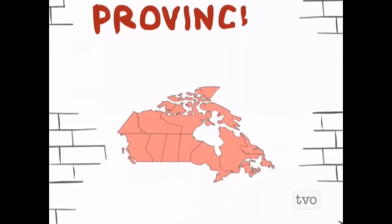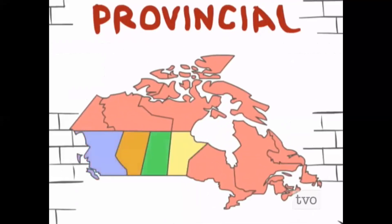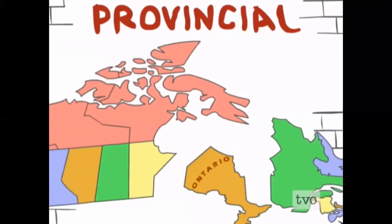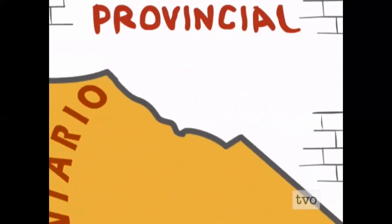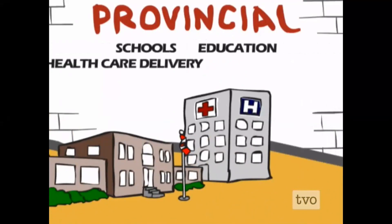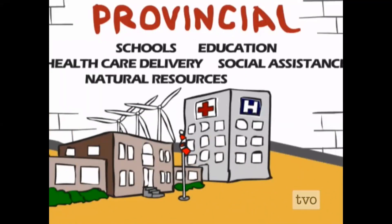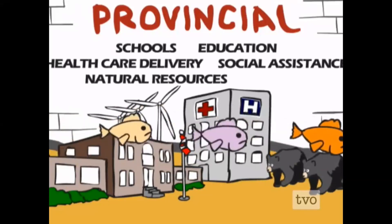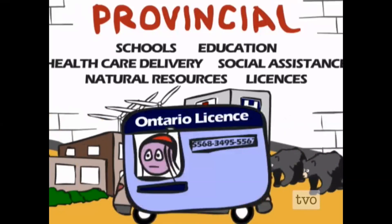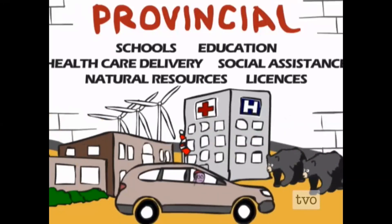The video then covers provincial responsibilities. Because the country is so big, the federal government splits some responsibilities with the provinces. Schools and education are provincial, as is health care. Social assistance, natural resources — including energy, wildlife, and fisheries — are also provincial. Driver's licenses are issued by the province as well.